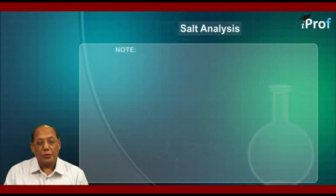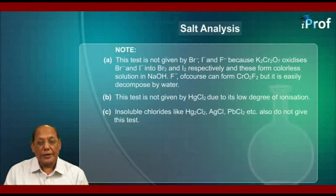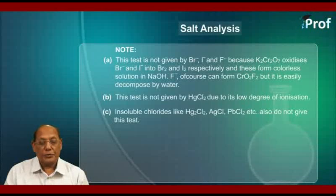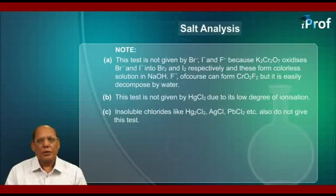Here is an important note. First, this test is not given by bromide, iodide, and fluoride, because K2Cr2O7 oxidizes bromide and iodide into bromine and iodine respectively, and these form colorless solutions in NaOH. Fluoride ions can form CrO2F2, but it is easily decomposed by water. Second, this test is not given by mercury chloride due to its low degree of ionization. Third, insoluble chlorides like Hg2Cl2, AgCl, PbCl2, etc., also do not give this test.